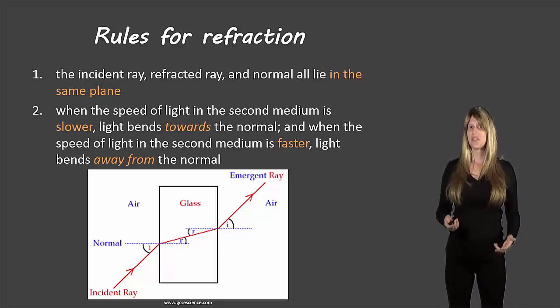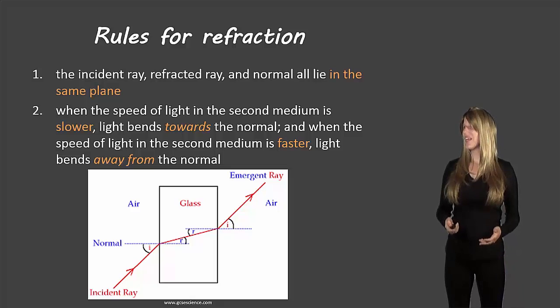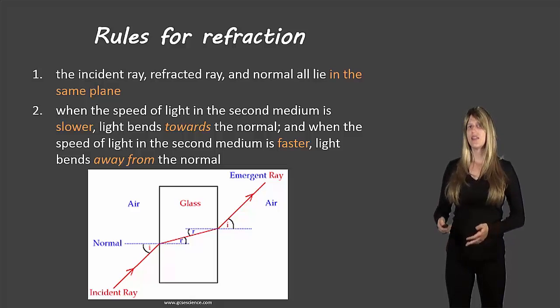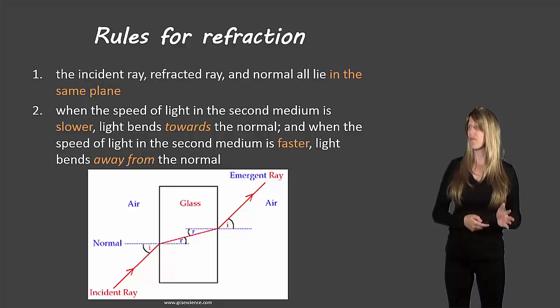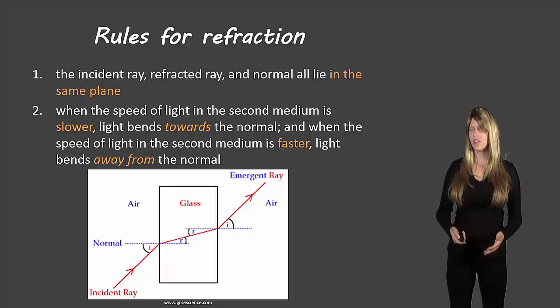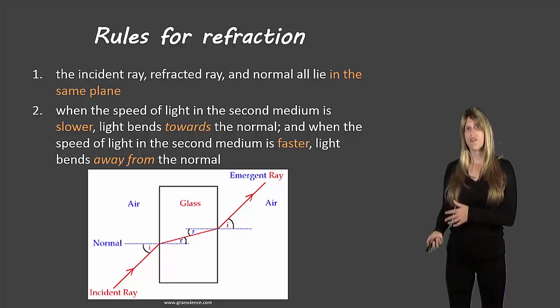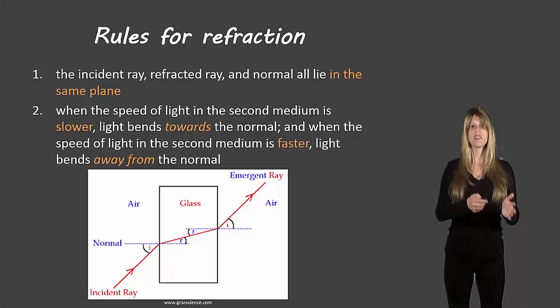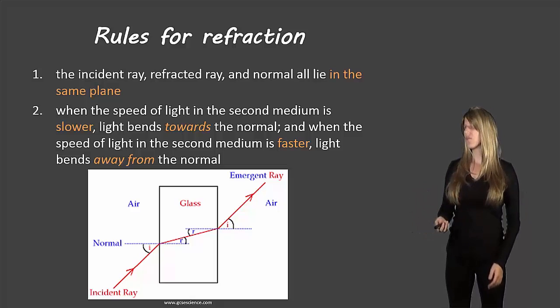The second rule, it's a little bit of a long rule here. When the speed of light in the second medium is slower, light bends towards the normal. When the speed of light in the second medium is faster, light bends away from the normal. So if it's slower, it goes towards, and if it's faster, it goes away from the normal.